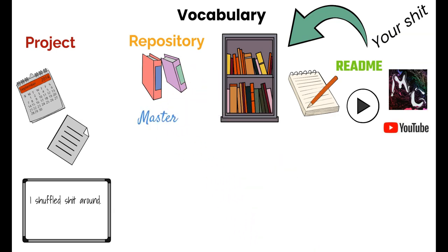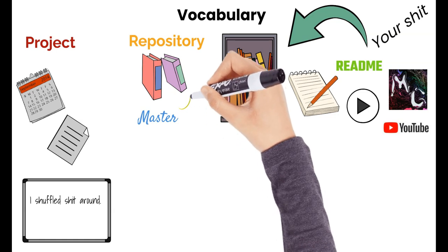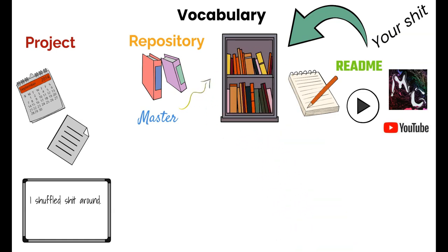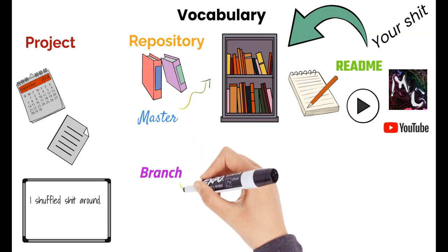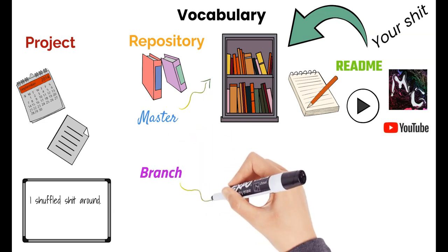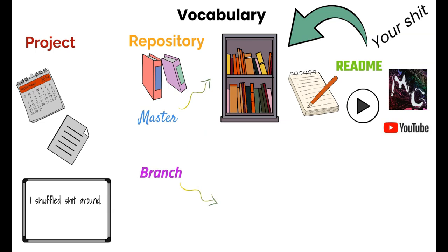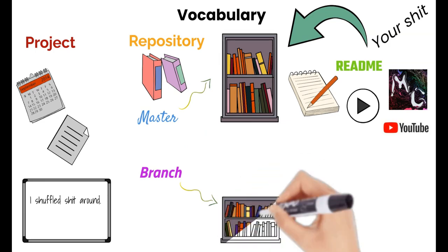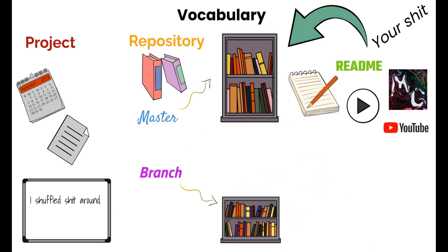A master is the main thing — the real thing, the final thing that is displayed on the web. A branch is like an experimental copy of your master where you can go in and make changes. If you get it right and you like it, then you can merge it with the master if you want. It's kind of like taking a copy of that bookshelf and moving stuff around to see if you like it better.